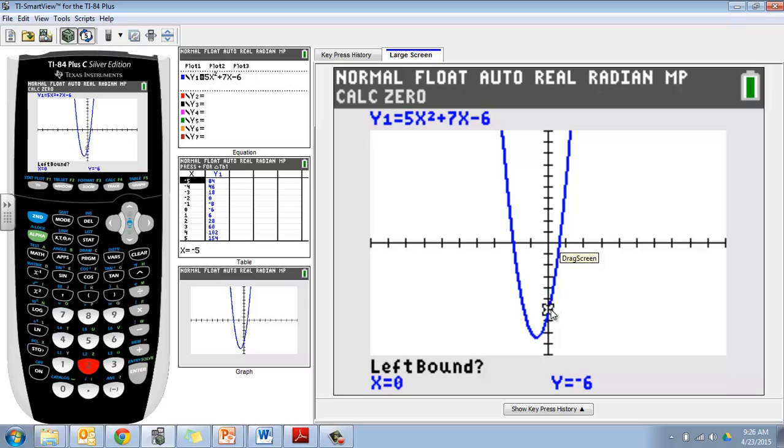Well my left bound needs to be to the left of this point right here. It's already set up to be to the left. I'm below it, but it's really to the left of it as well. So I hit enter.